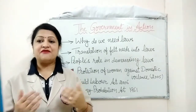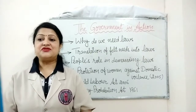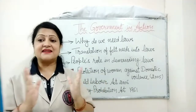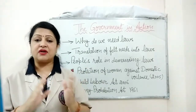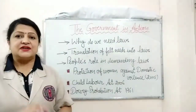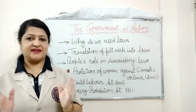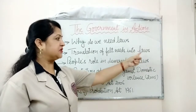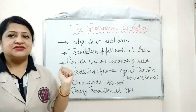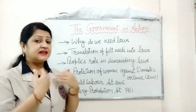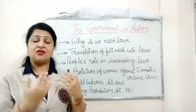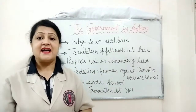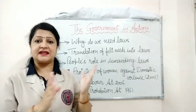If everyone starts to live in their own way, it would turn into something like animals living in a wild jungle. This is why any civilized society frames some laws, and then it has to have its own system to enforce the laws and bring the defaulters to book. Once the society frames the laws, they should be applicable to all irrespective of caste, creed, economic or political powers. The next point is translation of felt needs into laws — our needs are changing day by day.